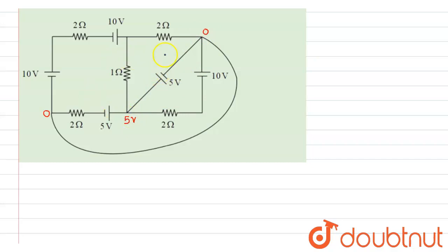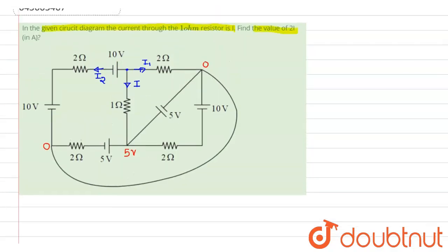Now we have to find the current through the 1 ohm resistor. So suppose this current is i, the current in this branch is i1, and in this branch it is i2. We assume the voltage at this point is v.